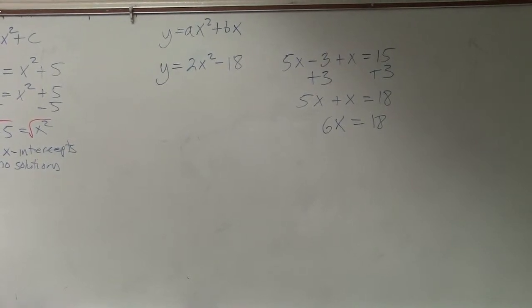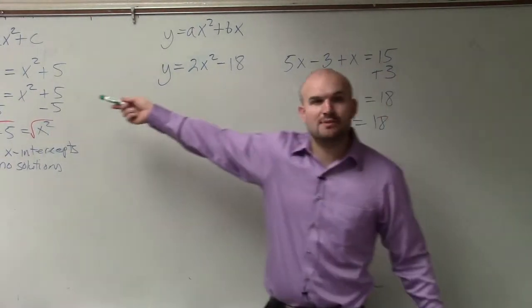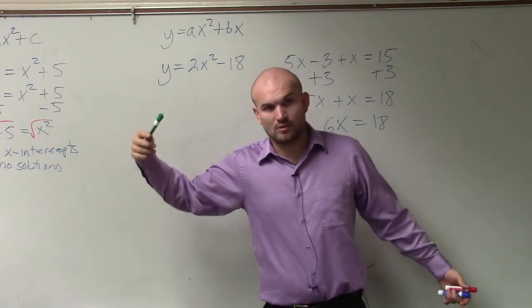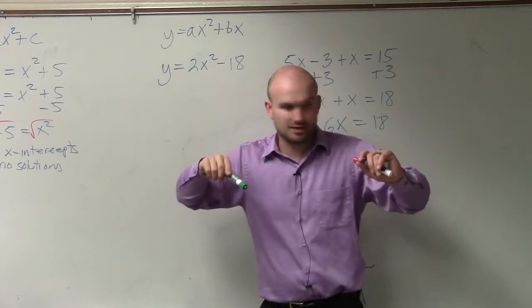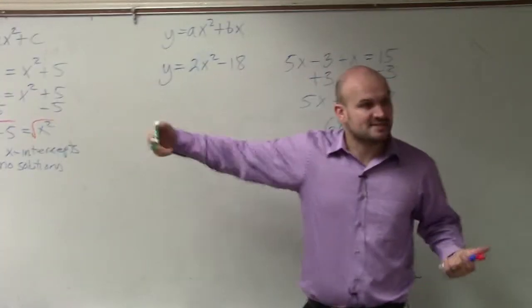So on this problem, you guys see, I have y equals x squared minus 18. Now, going back to what I've talked about for all of these, the first thing that I'm going to do is, well, before I get to the zero product property, which we are going to go to, the first thing I'm going to do is set my y equal to 0.